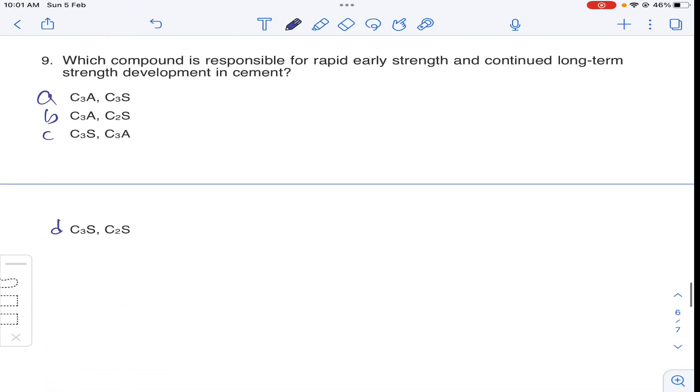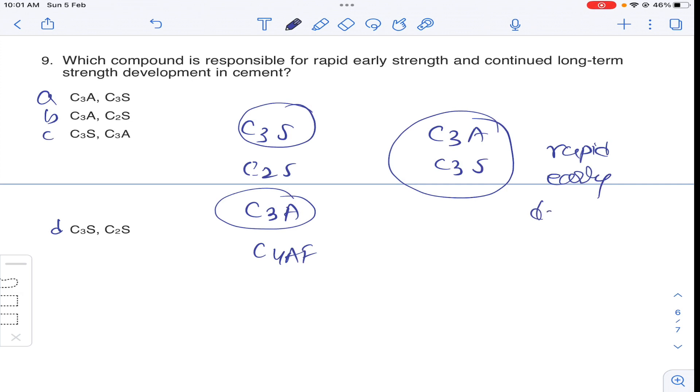Coming to question number 9. Which of the following compounds are responsible for rapid early strength and continued long term strength development in cement? Obviously, there are 4 Bogue compounds in cement: C3S, C2S, C3A, C4AF. Out of this, the most heat liberated by C3A and C3S. These are responsible for rapid early development of strength because they liberate high heat. So C3A and C3S. Answer A for question number 9.